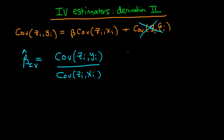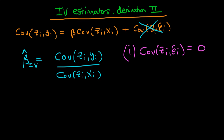So what assumptions did we need to make in order to derive this IV estimator? Well, the first assumption we need is that the covariance of our instrument with the omitted factors E_i has to be equal to 0. And we needed that in order to get rid of this second term on the right hand side.